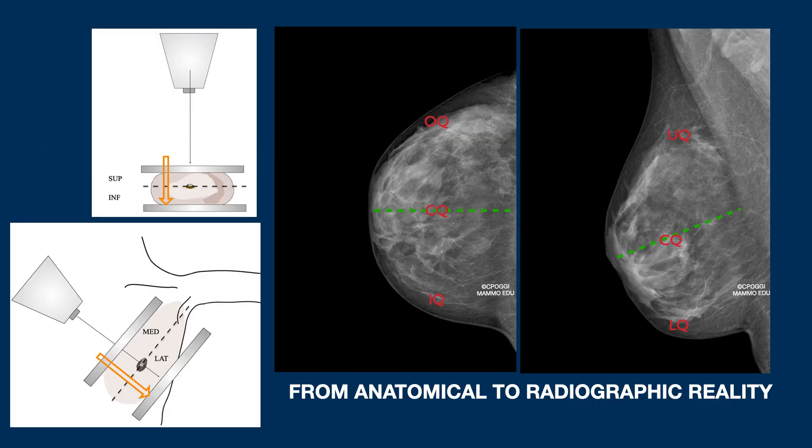In the CC projection, we know very well that the superior and inferior quadrants overlap each other according to the direction of the beam. So the only information that can really be obtained is in the lateral-lateral sense — what we can say observing a well-performed CC is if the lesion is located in the outer, central, or inner quadrants.